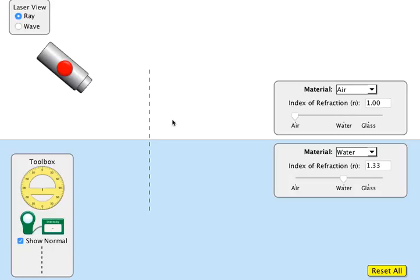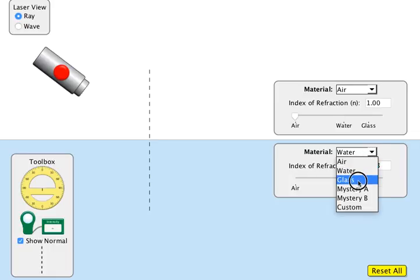First of all, before we go on, let me describe what we've got here. We've got a laser sitting over here which we are able to move around. We have two materials here - this is going to be air and this is going to be water, though we can actually change this to different substances.